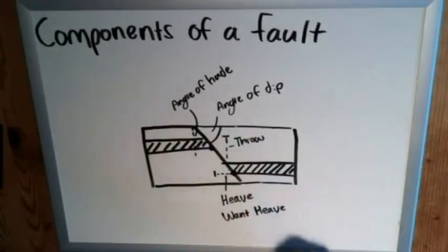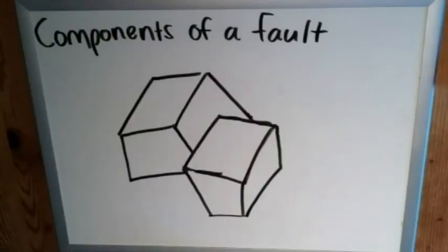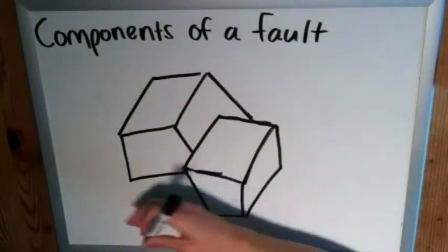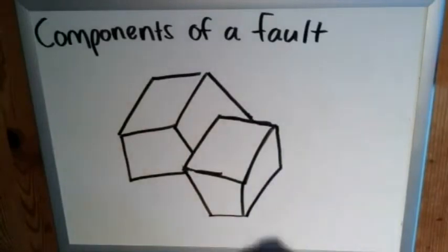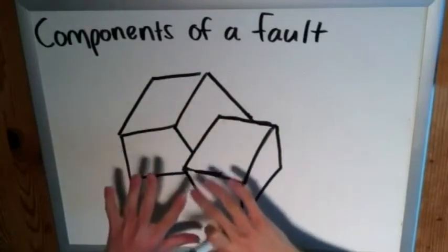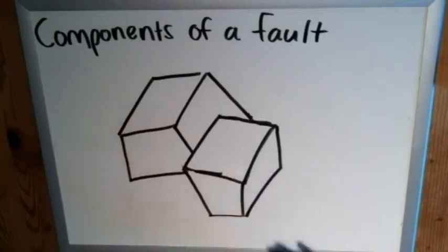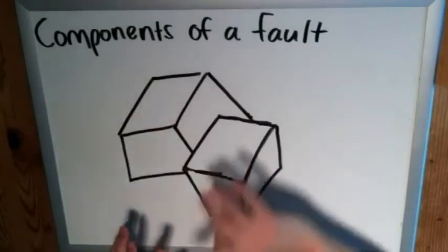Okay, it's also important to talk about these components on an oblique slip fault. So you can kind of imagine where they would be even though it's in a 3D block diagram, we use similar things. Just imagine these two when determining the throw and the heave just as two-dimensional, try to push them back to where they would be flat.